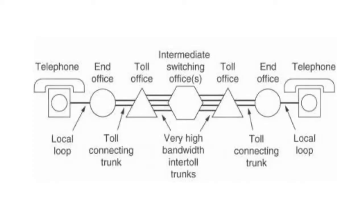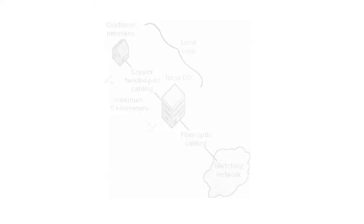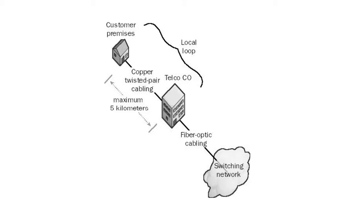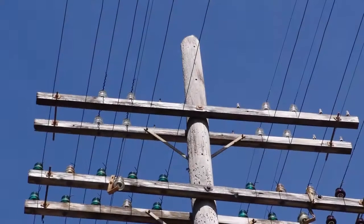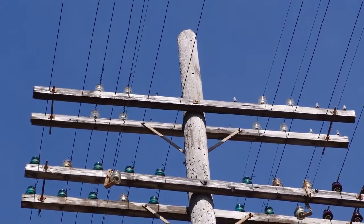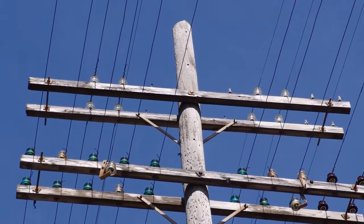The local loop is the portion of the telephone system that connects your home or office to the nearest central office of your local telco. The wiring used in the local loop is usually unshielded twisted pair cabling. The transmission method is analog, and the maximum distance from the telco central office to the subscriber's customer premises is about five kilometers.